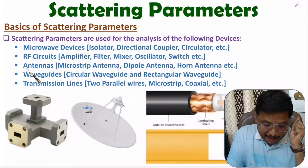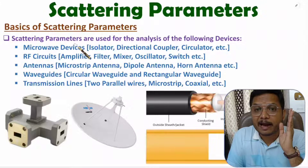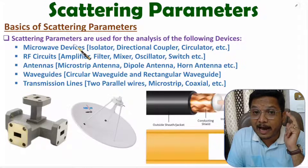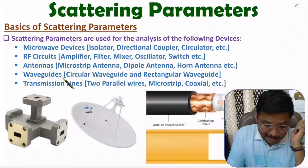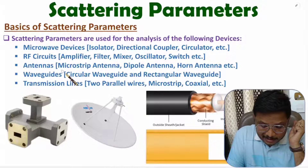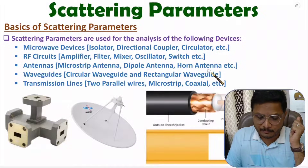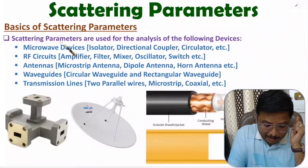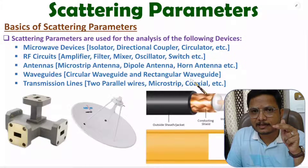We also analyze antennas using scattering parameters. In antennas, we try to identify bandwidth, which can be determined using return loss characteristics. Return loss characteristics is based on the reflection coefficient of a given antenna. Antennas analyzed include microstrip antenna, dipole antenna, horn antenna, and reflector antenna. Even waveguides are analyzed using scattering parameters — specifically circular waveguide and rectangular waveguide, which I will discuss in detail in future videos.